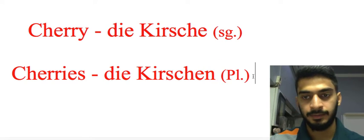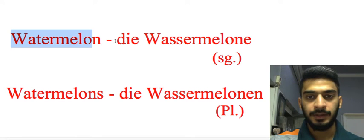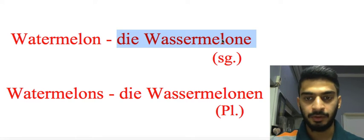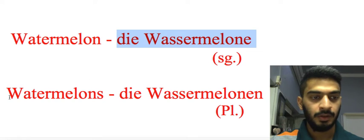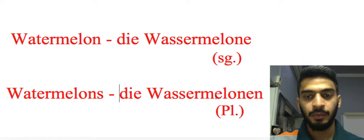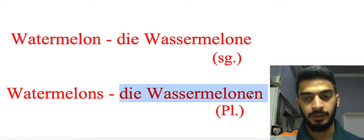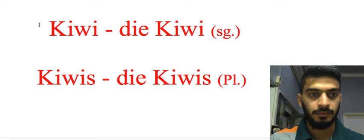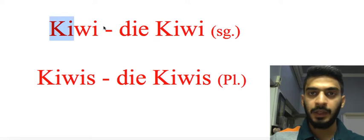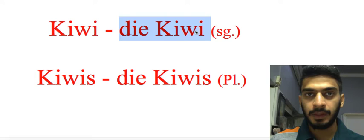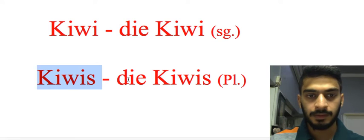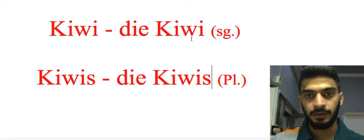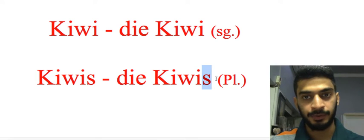Watermelon — 'die Wassermelone' singular, watermelons — 'die Wassermelonen' plural form — again extra 'n' at the last. Kiwi — we call it 'die Kiwi' in singular form, kiwis — 'die Kiwis' in plural form — so we have extra 's' at the last position.